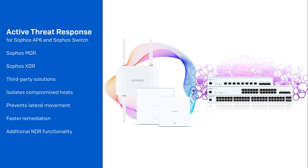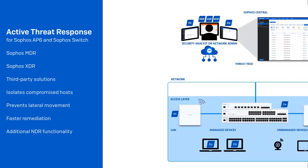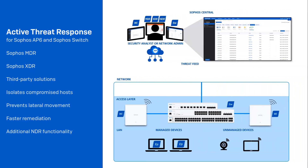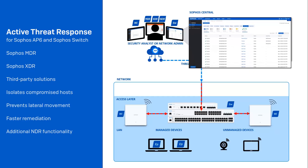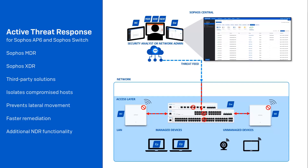For customers using Sophos NDR, this functionality adds a response action to detections from deep within the network. Here's how it works: a threat feed is sent via API with the MAC addresses of any devices that are potentially compromised. The feed updates all AP6 access points and Sophos switches managed in the same Sophos Central account, and the compromised devices no longer have access and are isolated across the network.